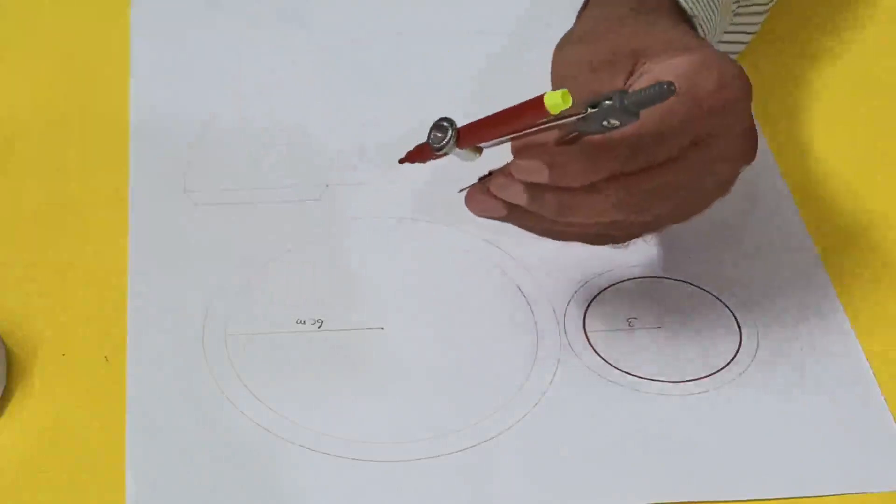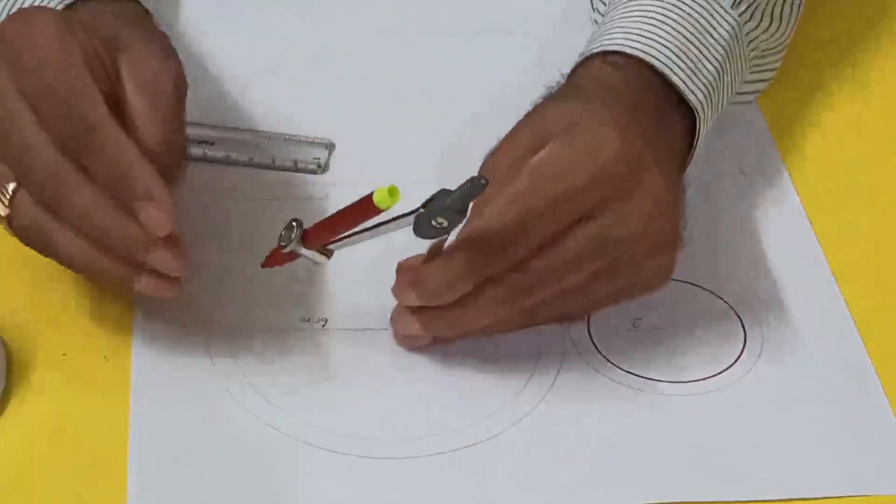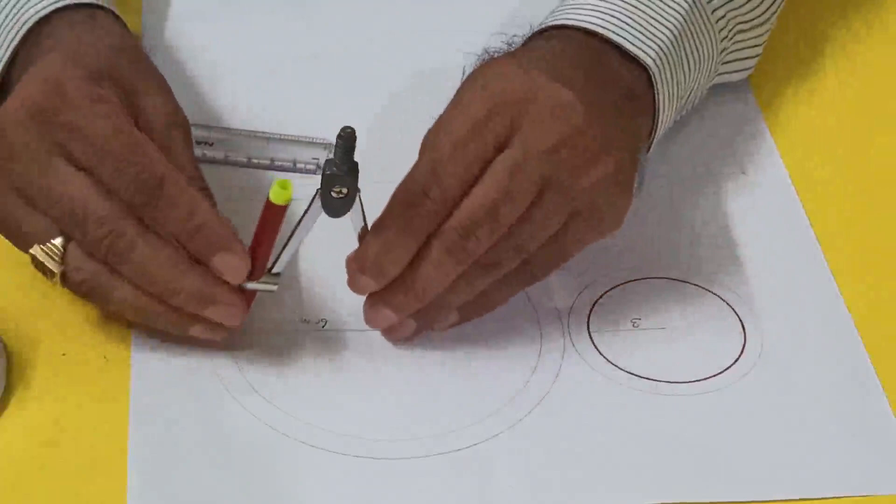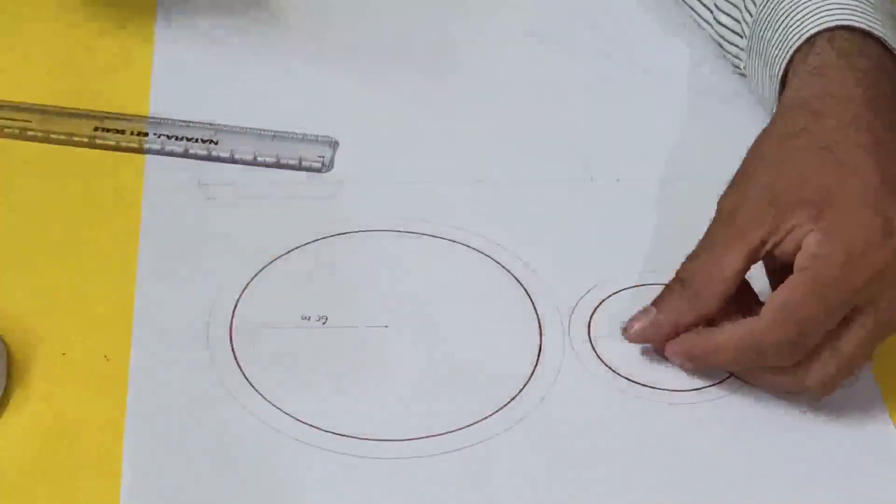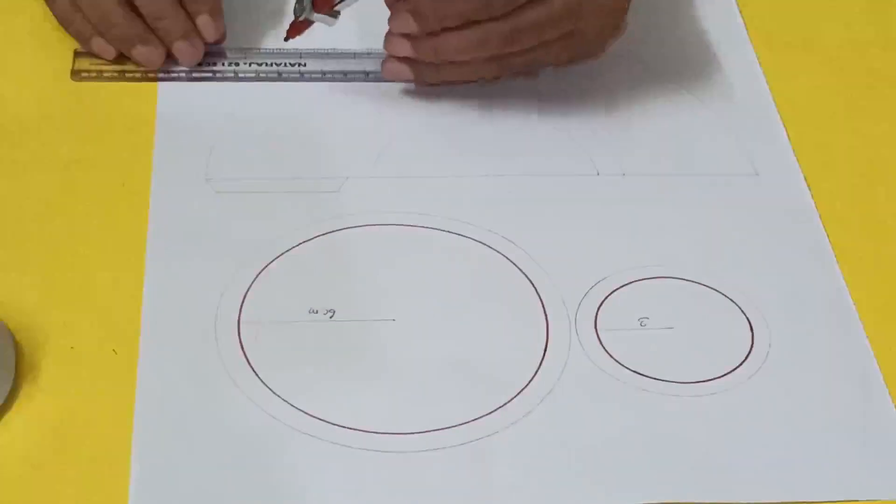And here six centimeters. So two bases are ready. Now for the border, one centimeter more width makes seven centimeters.